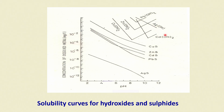These kinds of graphs help us decide what the pH of the sludge should be before we start filtering it.